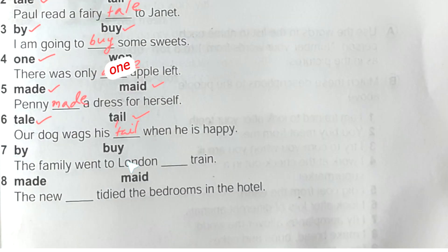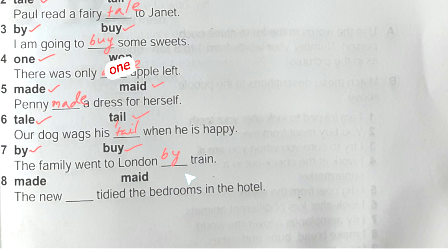Number seven: the family went to London dash train. Of course the family went to London — not 'buy,' it will be 'by' train. So 'by' is the appropriate word for this blank.